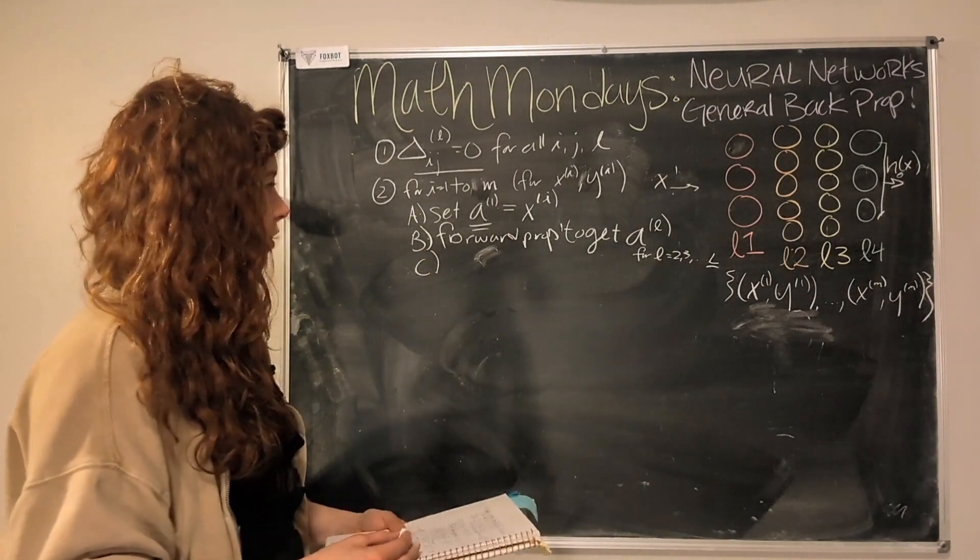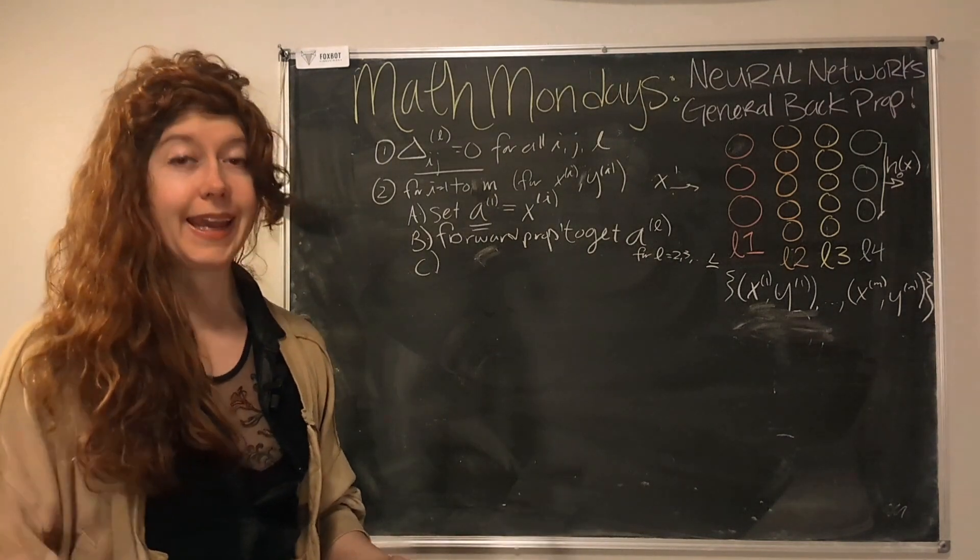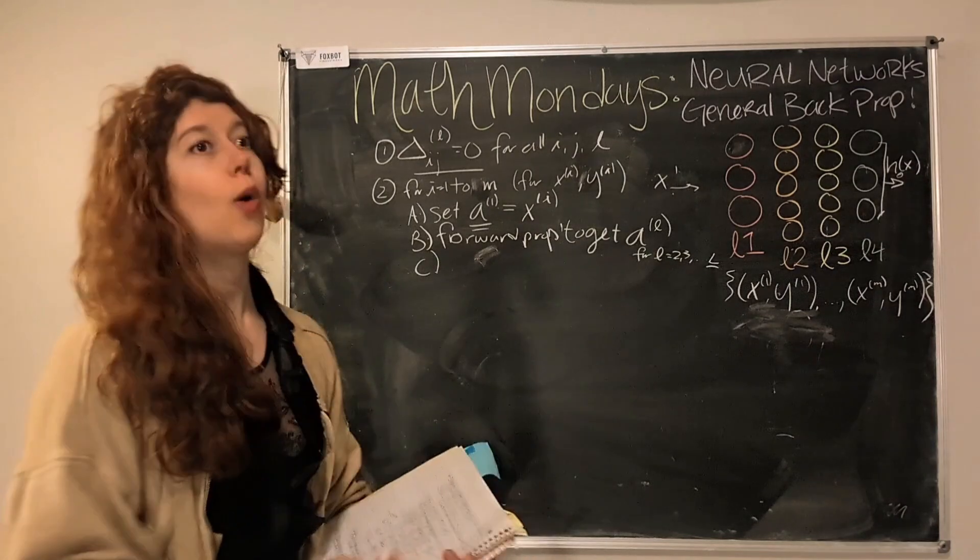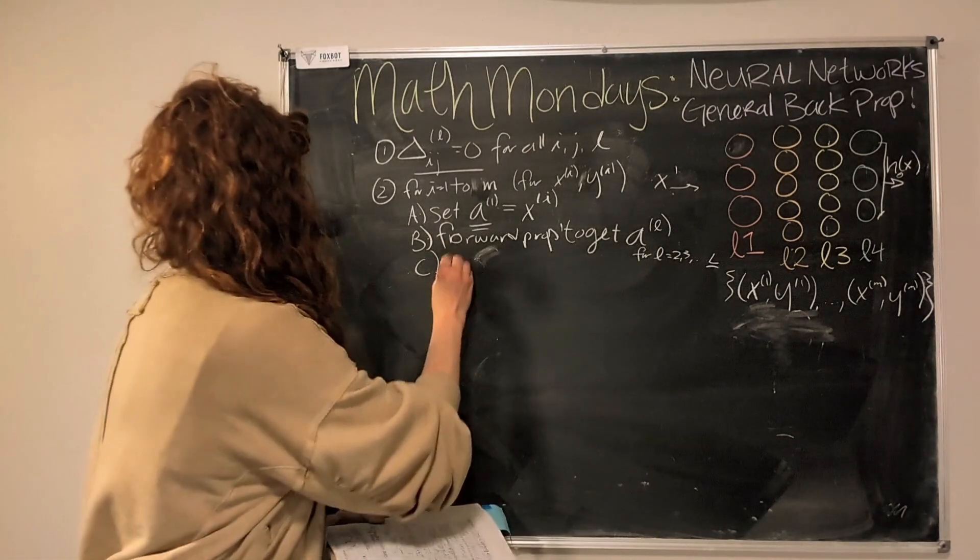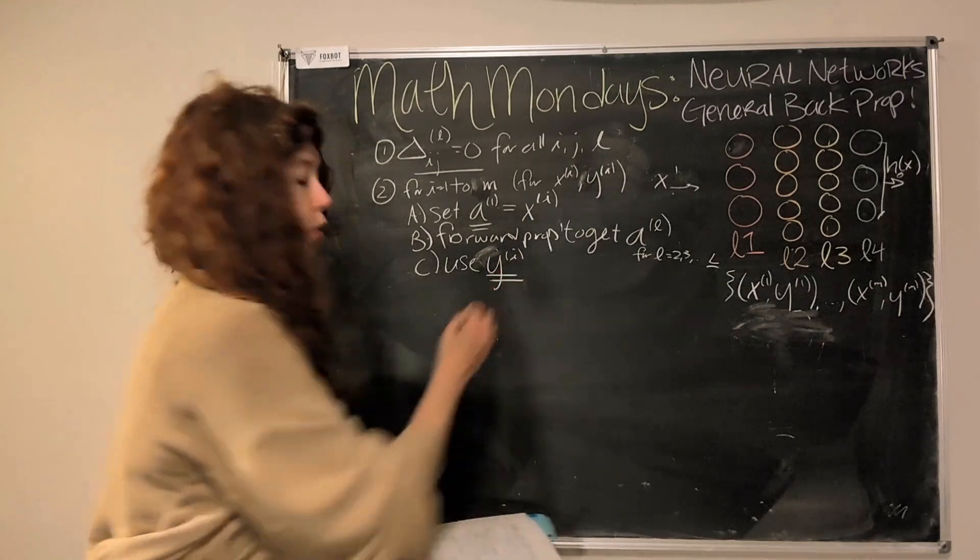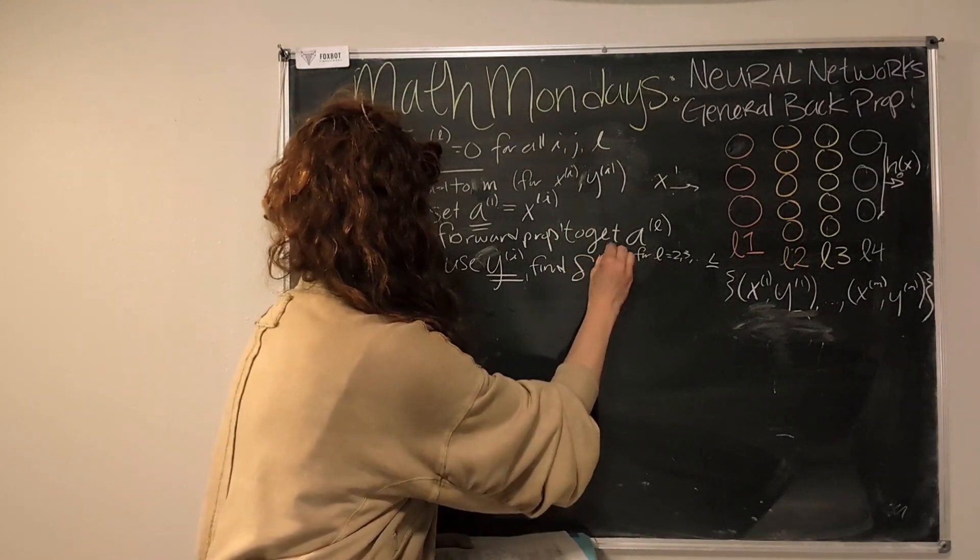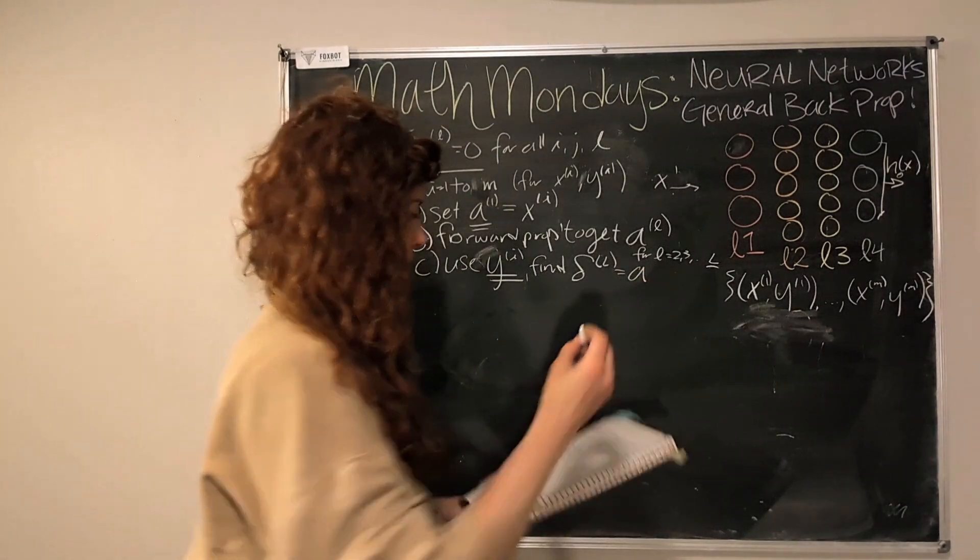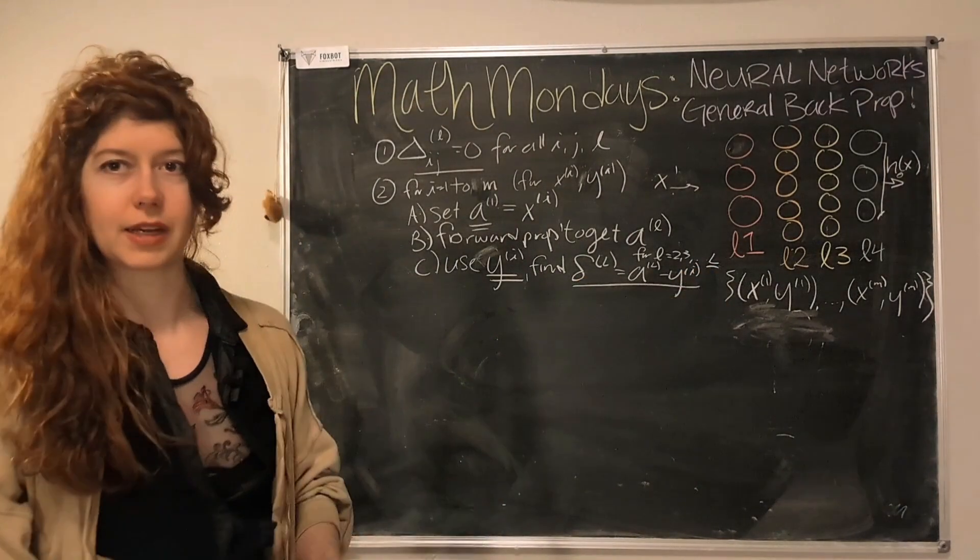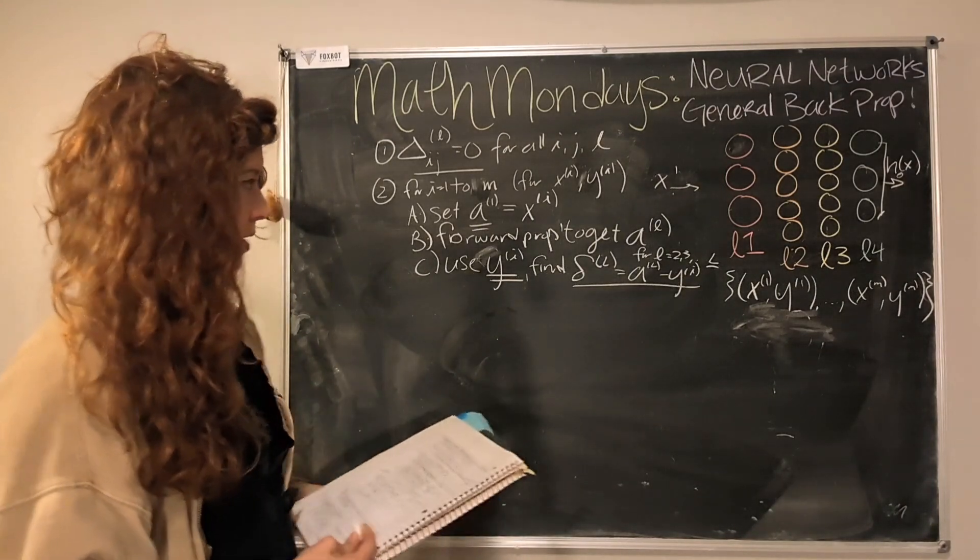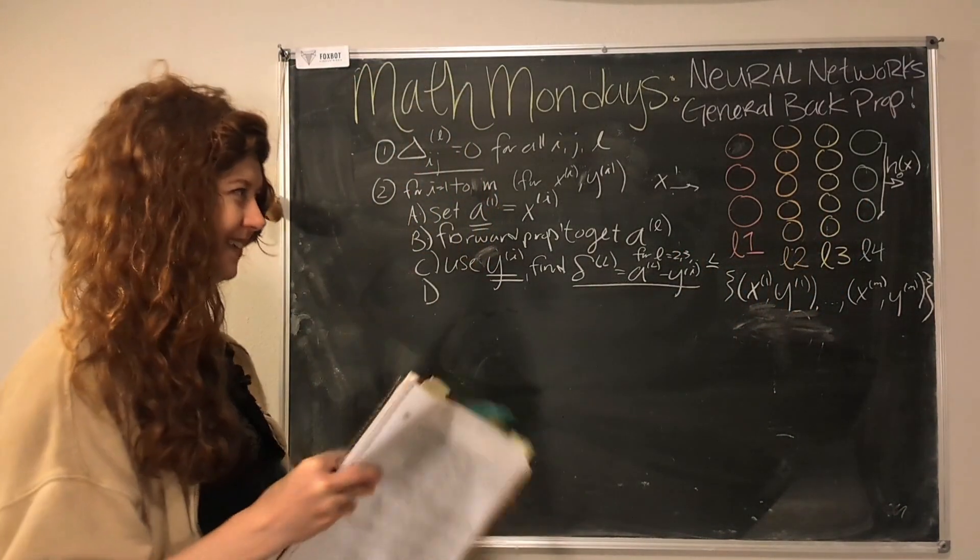Okay, so now that we have gotten the activation layers for each of the nodes doing forward propagation, we can compute the error in each of those nodes. Basically, okay, we ran through this. We got some values. How accurate are those initial values to our predicted values? Now we need to do that comparison. And so this is where we start to do back prop. So you use your known values Y from the training data to find the error for each of the layers. So first you start with the last layer and you calculate the error from the last layer compared to your actual training data.